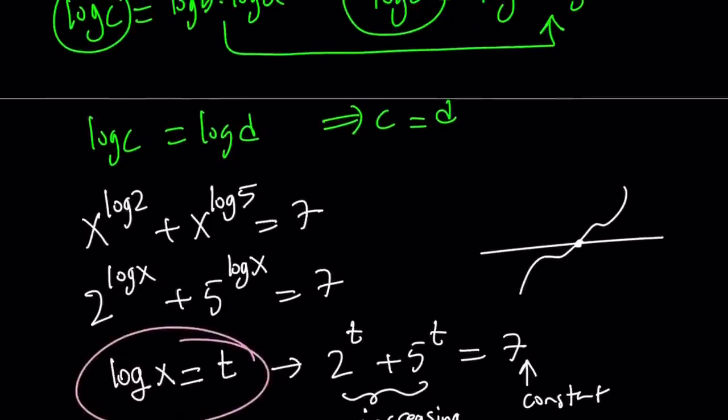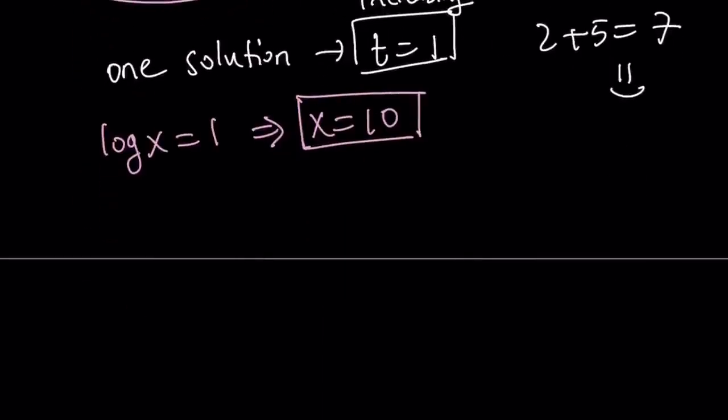Does that work? If you plug it into the original equation, you get 10 to the log 2 plus 10 to the log 5, which should equal 7. But 10 to the log 2 is 2. By definition of logs. And 2 plus 5 gives you 7. So this is true.